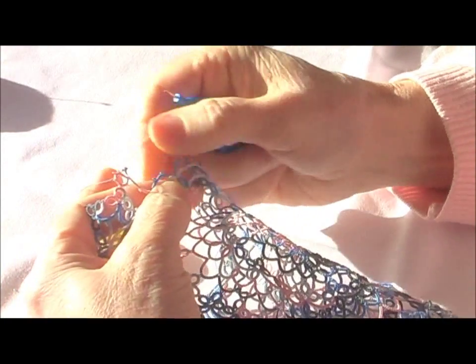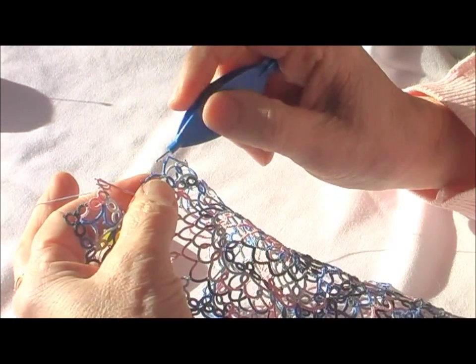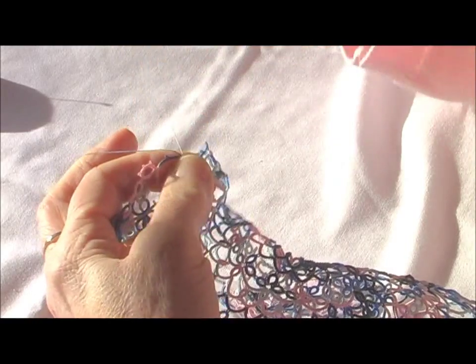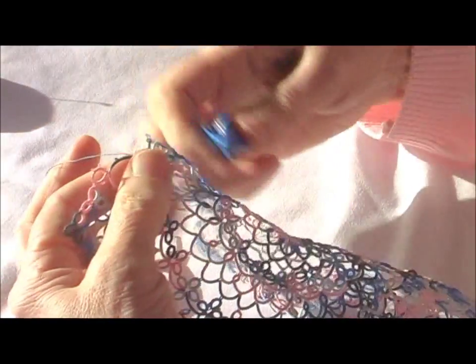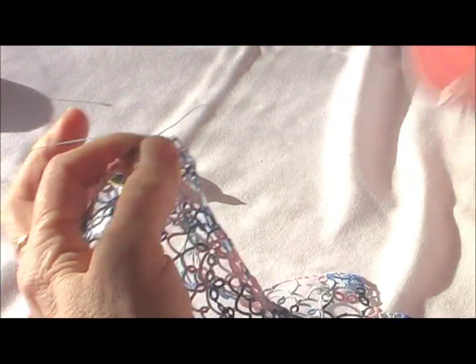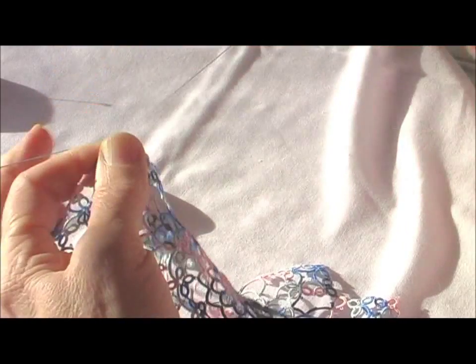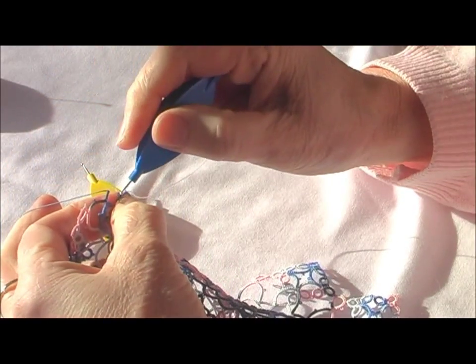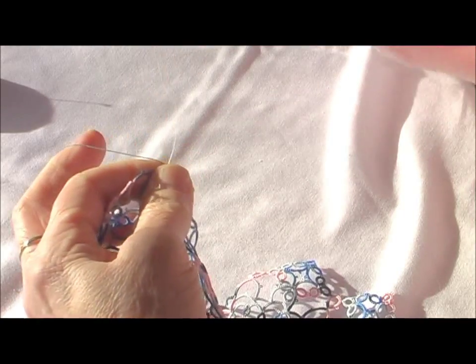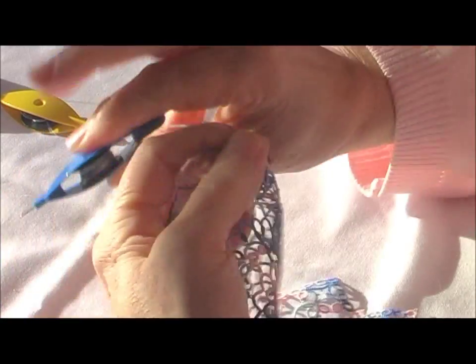Now going to join it, missing one picot on the same chain, join to the next picot with a lock join. The next chain is seven double stitches, join into the first picot on the next chain. Then we'll do another chain again of eight double stitches, picot, eight double stitches.